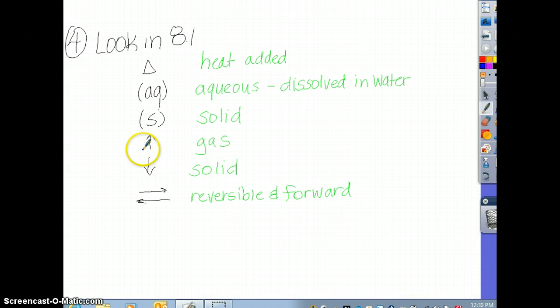If it's an arrow up, it's a gas. You could also put it in parentheses with a G. And then you know if you have an arrow going forward, an arrow going backwards at the same time, you have a reversible reaction going on. We call this equilibrium. So look in section one.